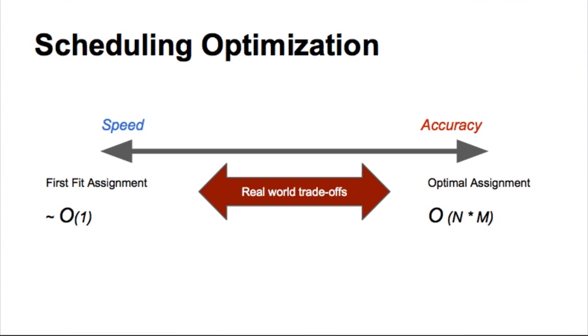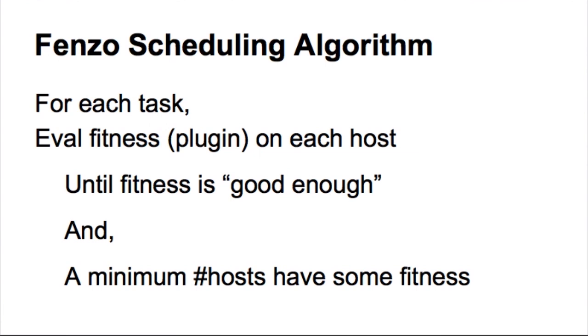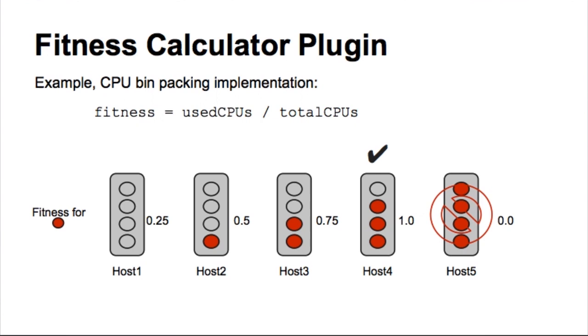The scheduling algorithm is actually very simple. It just gives a workflow for the scheduler to do. For each task that needs to be scheduled, we evaluate fitness on a bunch of hosts. For a completely optimal solution, you may want to do all hosts, but then in real world, we just need to find a host that has a good enough fitness. So let me give you an example of how this works. Suppose I want to do CPU bin packing. What I want to achieve is that I want to make sure that I use up a host such that all of its CPUs are used up before I start using other machines that have more CPUs idle. Then the CPU bin packing fitness calculator, as simple as saying used CPUs divided by the total CPUs. So if I had five hosts here, they have this ratio that come out of the fitness plugin. And then that lets me pick host four here, and that automatically does bin packing.